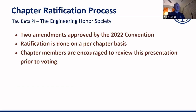The chapter ratification process: there were two amendments approved by the 2022 convention to the Tau Beta Pi Constitution. In order for those to be passed, ratification needs to be done by each chapter on a chapter-by-chapter basis.